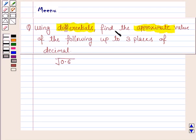Using differentials, find the approximate value of the following up to 3 places of decimal. The given number is under the root 0.6.